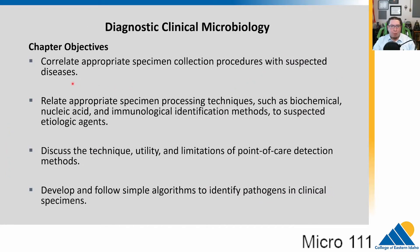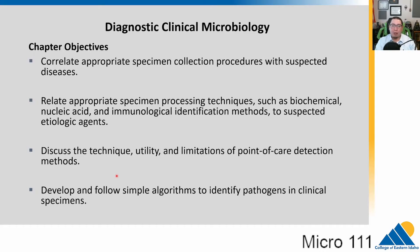We're going to talk first about specimen collection. There are some key things that need to be thought about when specimens are collected. We'll talk about some technologies used to process specimens and identify what might be in there, particularly point-of-care detection methods, which are often rapid tests. We'll also talk about algorithms, which are standard procedures to identify clinical specimens.